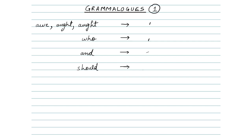Next, we have 'should'. This is also represented by a tiny light stroke, but this time on the line, like this. Remember, this also has to be made from the downwards to the upwards direction.